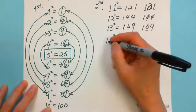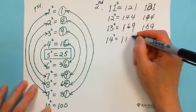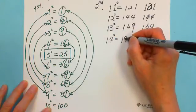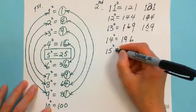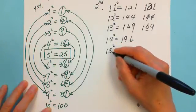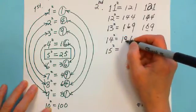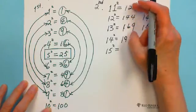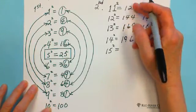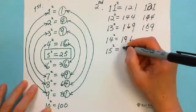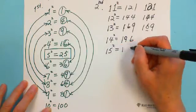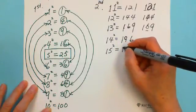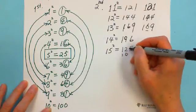What about 14 squared? 1 squared is 1, 4 squared is 16. Multiply the digits: 2 times 4 is 8, plus carry — you get 196. Now 15 squared — this is where you need to be careful. 1 squared is 1, 5 squared is 25. Then 2 times 1 times 5 is 10. That 10 carries over, and that's why you get 225.